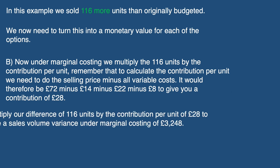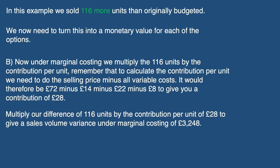The final step is to multiply our difference of 116 units by the contribution per unit of £28 to give a sales volume variance under marginal costing of £3,248.